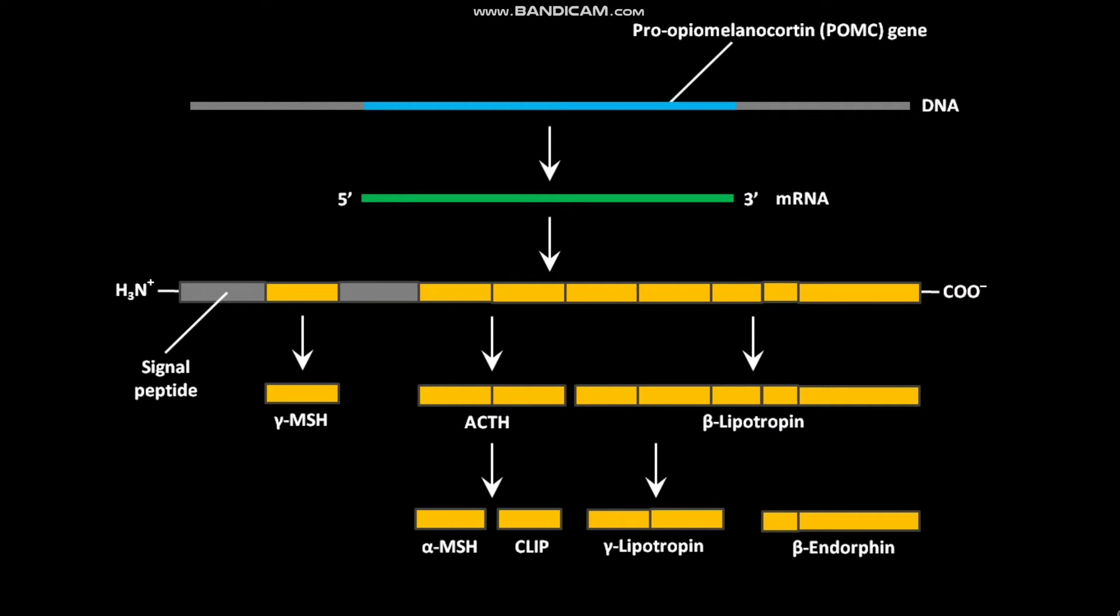Gamma-lipotropin undergoes cleavage by protease to produce beta-MSH.